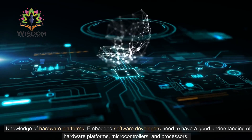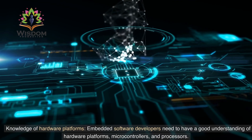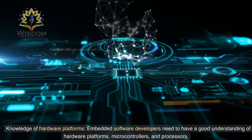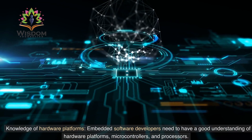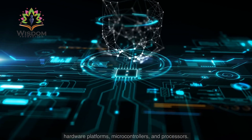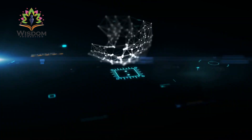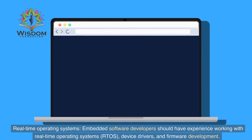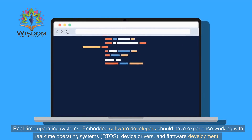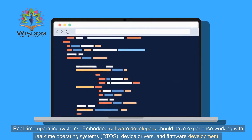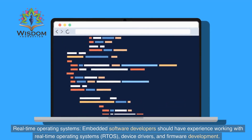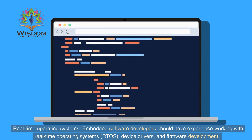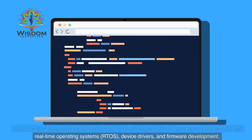2. Knowledge of Hardware Platforms — Embedded Software Developers need to have a good understanding of hardware platforms, microcontrollers, and processors. 3. Real-time Operating Systems — Embedded Software Developers should have experience working with real-time operating systems (RTOS), device drivers, and firmware development.